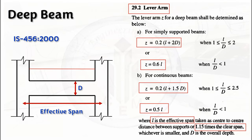IS 456 has provided simplified empirical formulas to calculate the lever arm for deep beams. Instead of calculating the lever arm manually, we can simply use these formulas. For simply supported beams, follow the condition given in clause (a), and for continuous beams, follow the formula given in clause (b). Using these formulas, we can calculate the lever arm for deep beams.